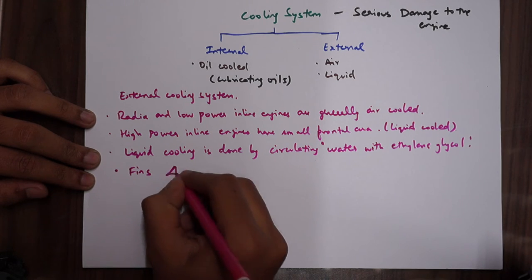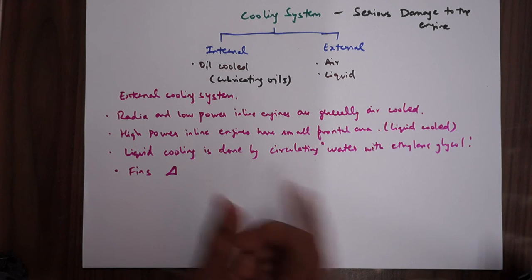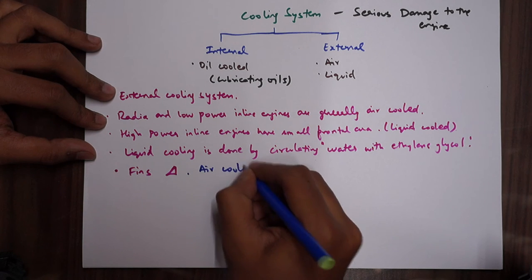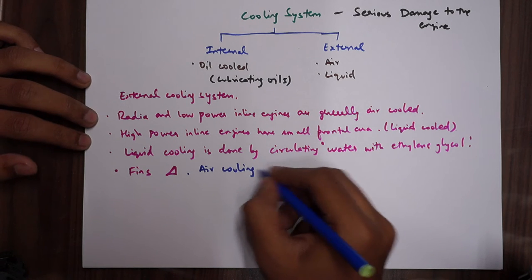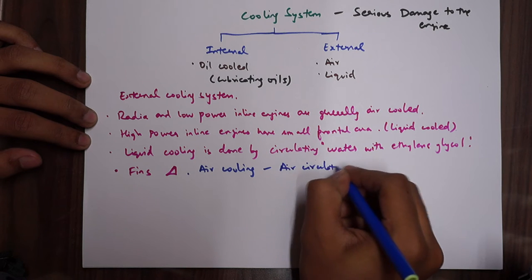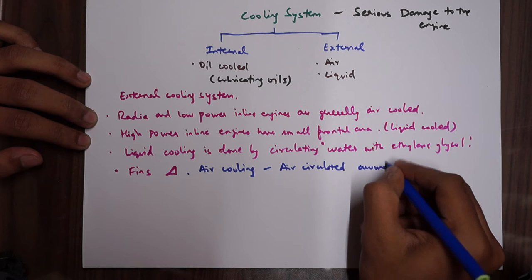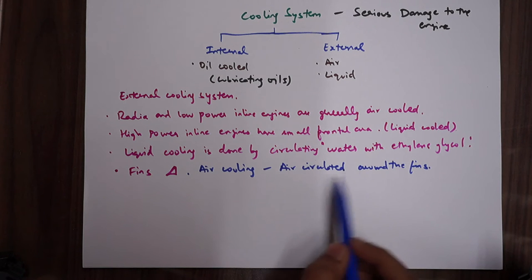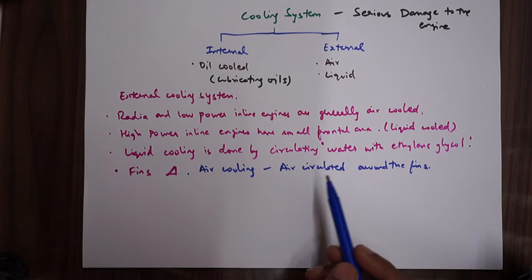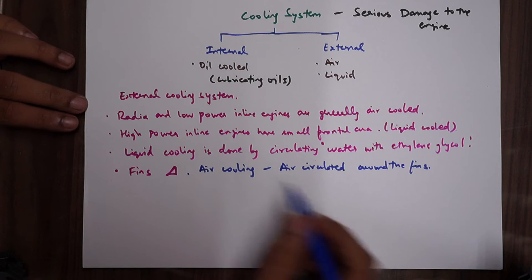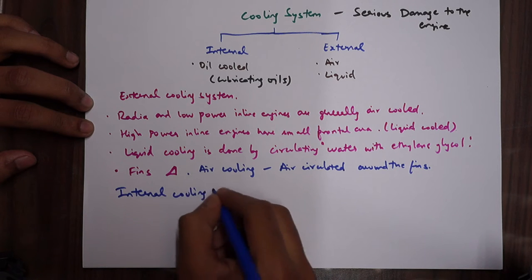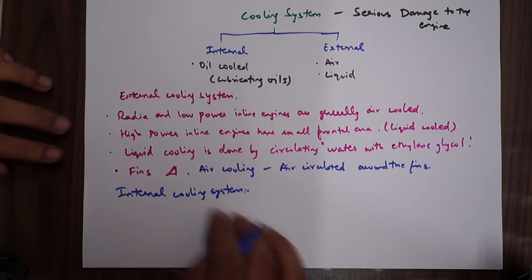There's something called fins - triangular strips attached to the piston cylinder. In air cooling, air is circulated around the fins. Fins increase the surface area so they dissipate heat, and since air that is coming in is obviously cooler, heat exchange happens and the cylinder and the piston engine is cooled.